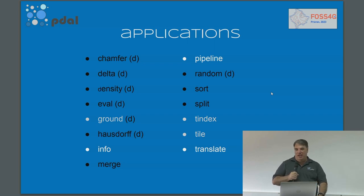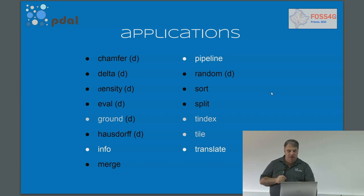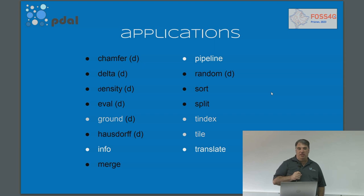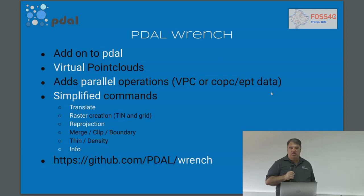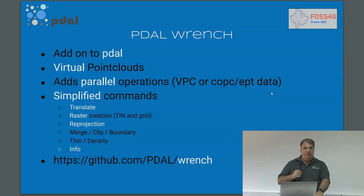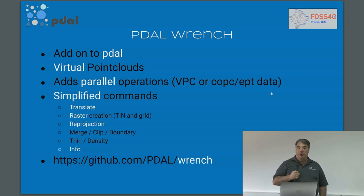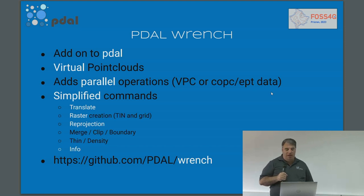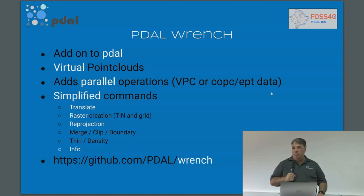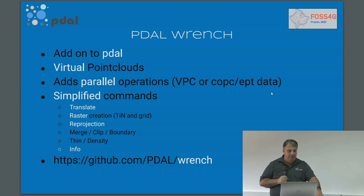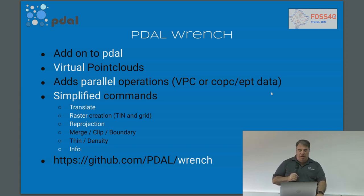We found some bugs in the 2.5.5 release, so we have a planned deprecation process, but if we hear from people that they do use these commands, we won't deprecate them. One of the things that's new now is a library called Poodle Wrench, which is an add-on to Poodle — it does require Poodle. It's a higher-level library designed to work with simplified commands. One of the really nice things it adds is parallel operations to Poodle, something that Poodle doesn't have currently. This is an application that runs on top of Poodle and supports virtual point clouds.